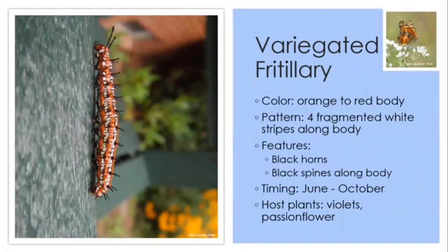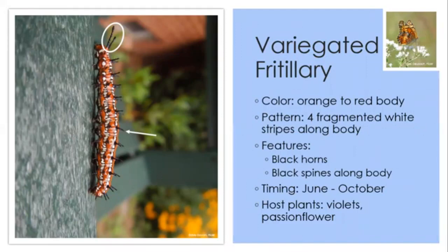Next is the variegated fritillary caterpillar, which has an orange to red body with four fragmented white stripes, two black horns, and black spines along the body. You can find them June through October on herbaceous plants including violets and passionflower.